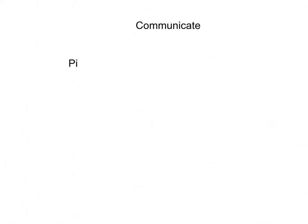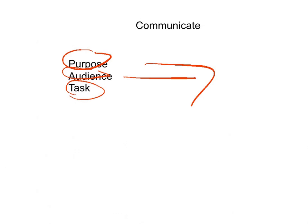The last step in the recursive process of online reading comprehension is to have students communicate the information they have. There are so many ways to do that on the iPad. The point is that students understand their purpose, their audience, and their task — and these three choices will influence what app they use to communicate. You as a teacher also have to design the task for students. You want to be able to assess that information, so you could have them upload it to Google Drive, Dropbox, or share their presentation with you.